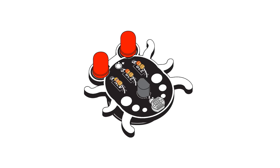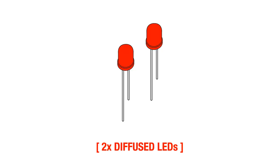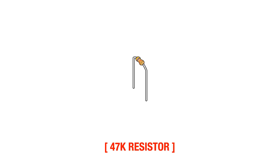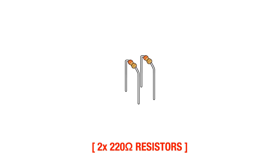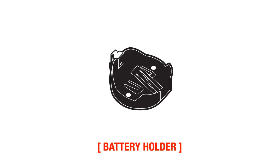This is the Weevil Eye kit, and it includes the Weevil Eye PCB and two red diffused LEDs. It includes one 47K resistor, two 220 ohm resistors, one transistor, a miniature photocell, a coin cell battery holder, and a 20mm coin cell battery.